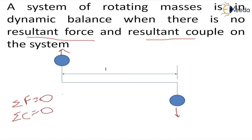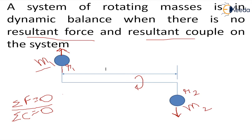Here we have taken a small example: let's say there is a mass m1 and a mass m2. These masses are producing forces radially outward, and if they are connected by a shaft rotating at some angular velocity omega, they produce centrifugal forces acting radially outwards. Summation of forces equals zero if m1·r1·omega² plus m2·r2·omega² equals zero. Since omega is the same, we omit it and say m1·r1 plus m2·r2 equals zero, so the first equation — forces balanced — is satisfied.